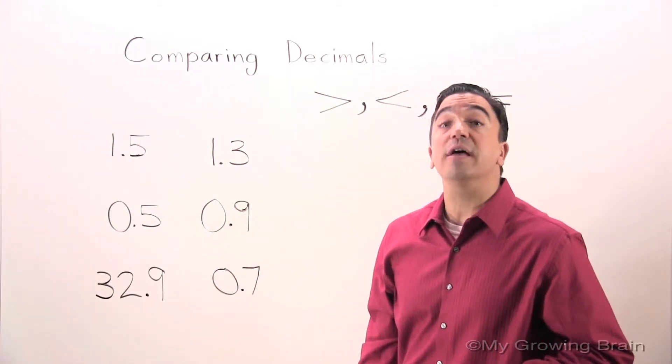Let's look at the ones place. As you can see, the digits are the same, so we need to move on.